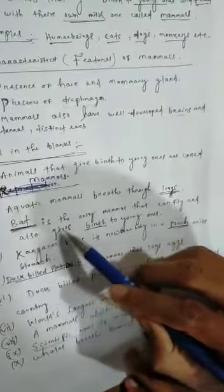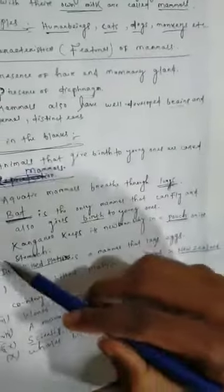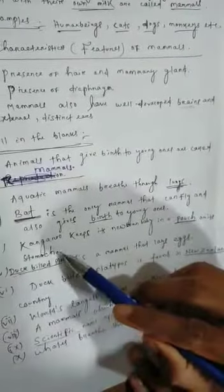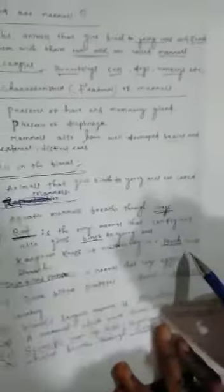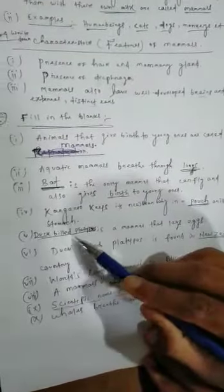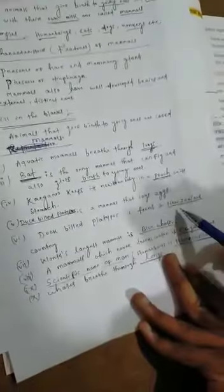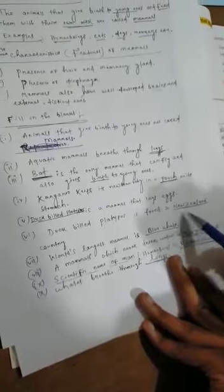Number four: Kangaroo keeps its newborn baby in pouch on its stomach. Number five: Duck-billed platypus is a mammal that lays eggs. Duck-billed platypus is found in the country named New Zealand. Next question: Duck-billed platypus is found in which country? New Zealand.